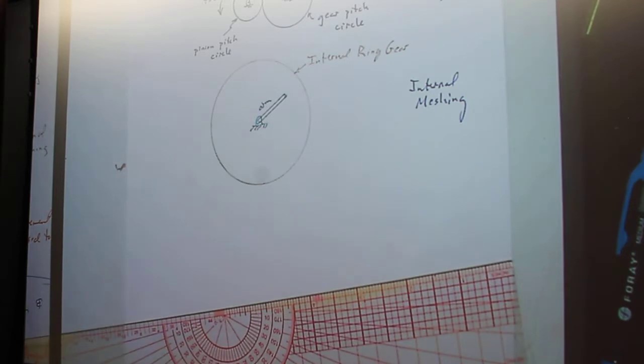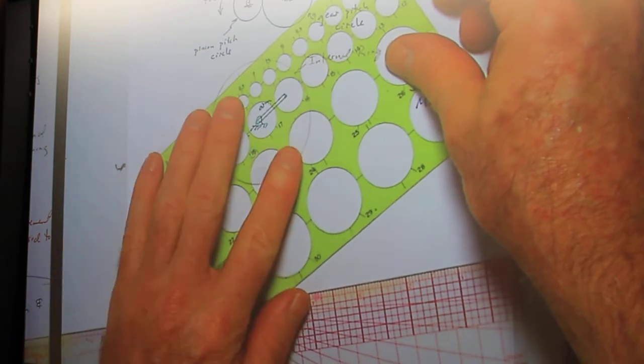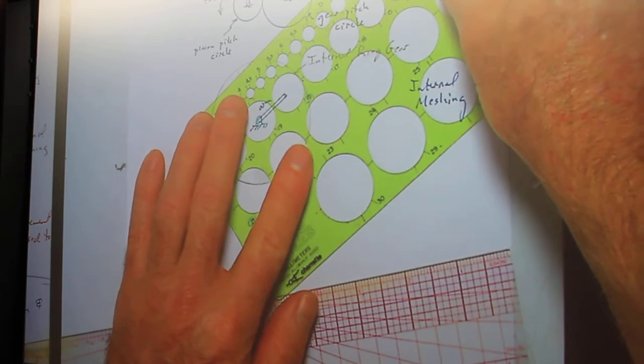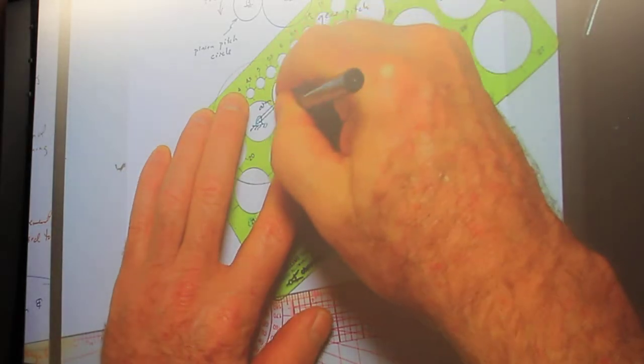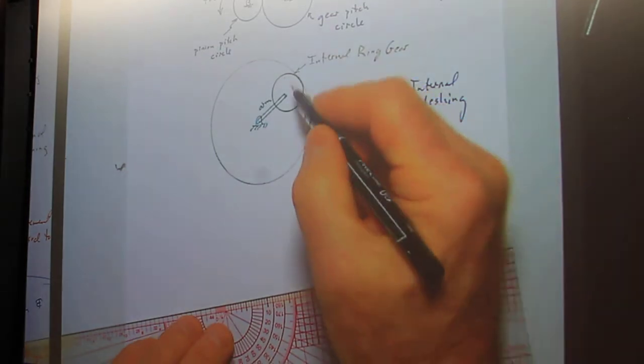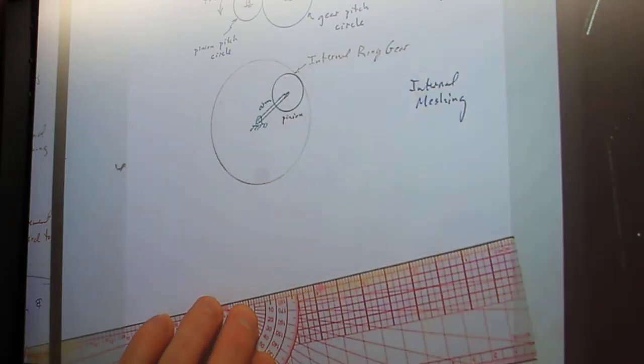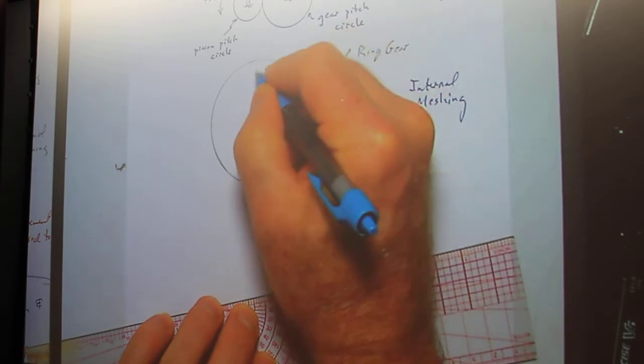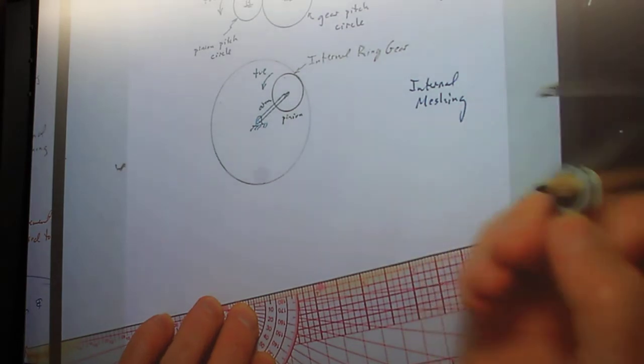And then we can draw this whole circle here. Right there. And this would be your pinion. So in this case here, a positive motion here will produce a positive motion on the ring gear.